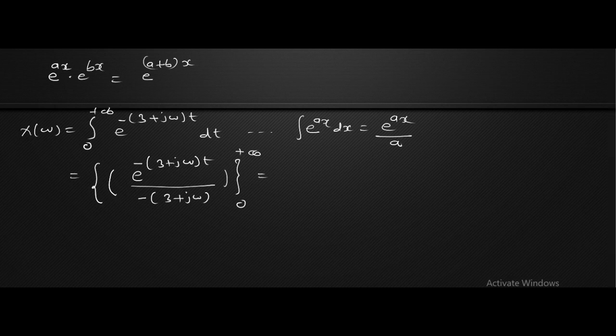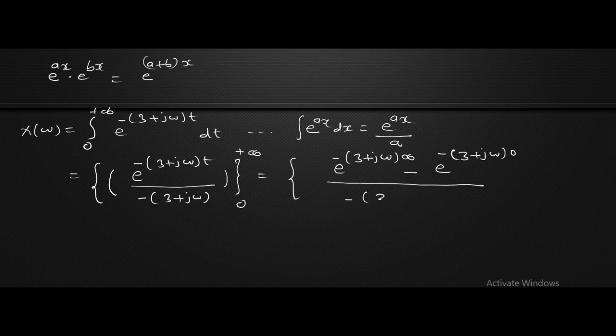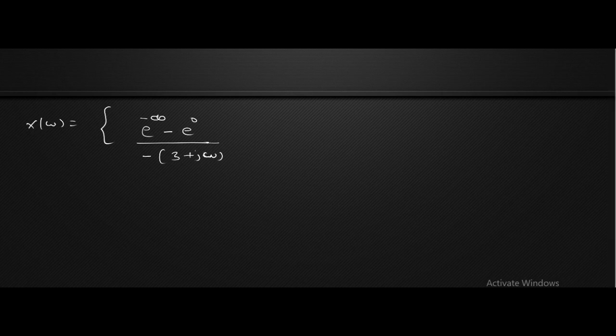Substituting the limits from 0 to plus infinity: we get e raised to minus (3 plus j omega) times infinity, minus e raised to minus (3 plus j omega) times 0, all divided by minus (3 plus j omega). Now, e raised to minus infinity is very very small and is taken as 0, while e raised to 0 equals 1. So this becomes 0 minus 1, divided by minus (3 plus j omega).